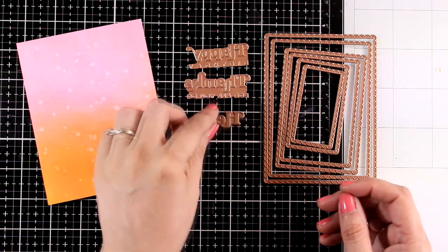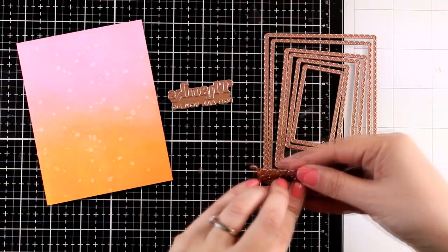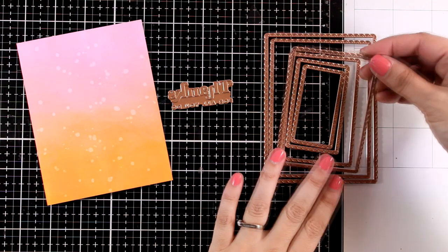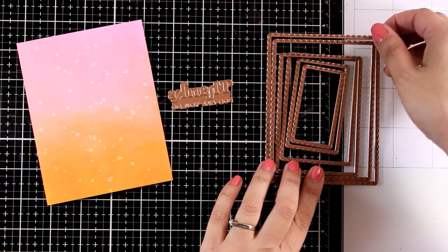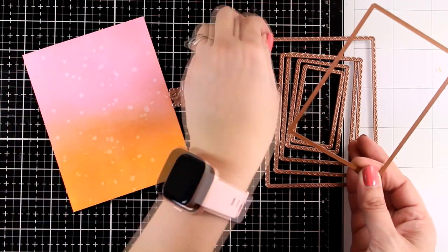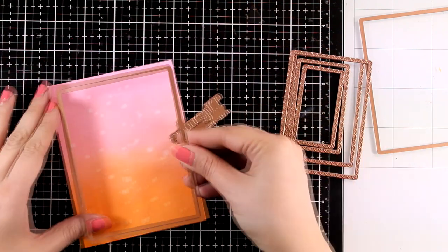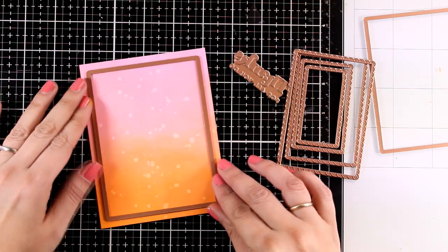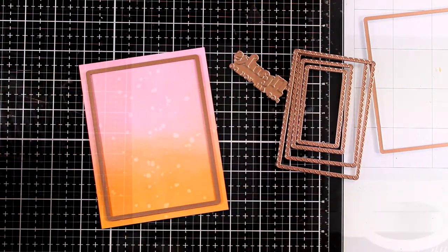One is for birthdays, the other one is a thank you, and there is also the word hello. I'm going to use the biggest of those plates and align it on top of my background, and I'm also going to combine one of the sentiments. I usually send a lot of thank you cards so I'm going to use the thank you sentiment here.